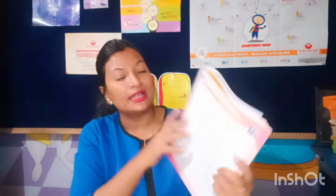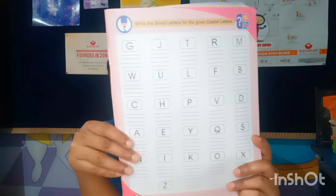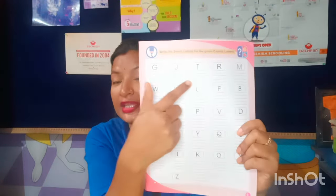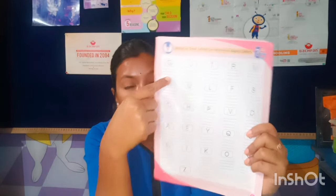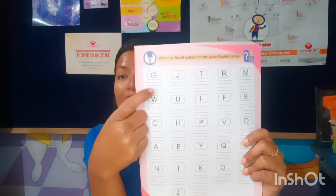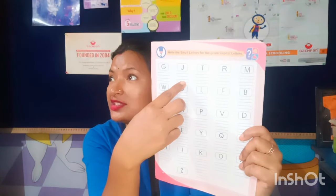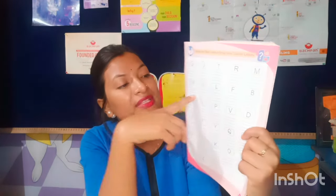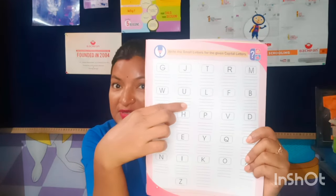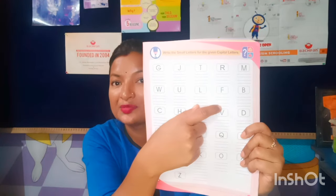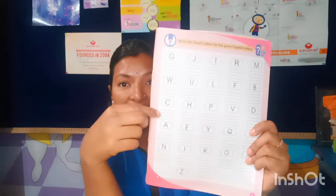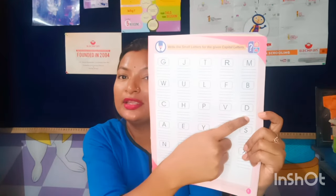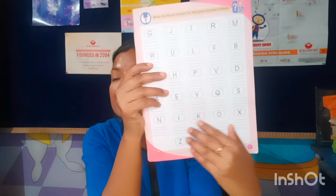Next topic: write the small letters for given capital letters. All the letters are given in jumbled order — not in sequence. Children have to see the capital letter and write its small letter. For example, capital G — write small g; capital J — small j; capital T — small t; capital R — small r; capital M — small m; capital W — small w; capital U — small u; capital F — small f; capital B — small b; capital C — small c; capital H — small h; capital P — small p; capital D — small d. Complete all through Z.